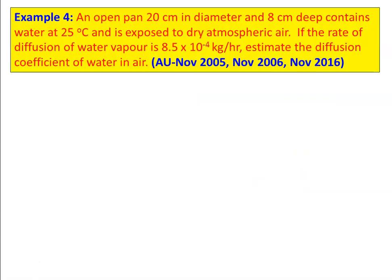In example number 4, from various university courses — November 2005, November 2006, and November 2016 — an open pan, 20 centimeter in diameter and 8 centimeter deep, contains water at 25 degree Celsius and is exposed to dry atmospheric air. If the rate of diffusion of water is 8.5 into 10 power minus 4 kilograms per hour, estimate the diffusion coefficient of water in the air.